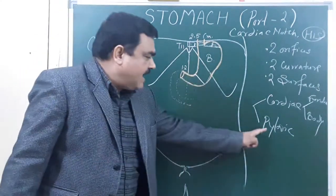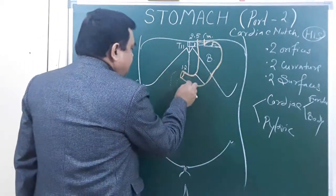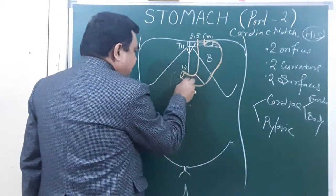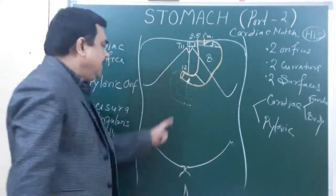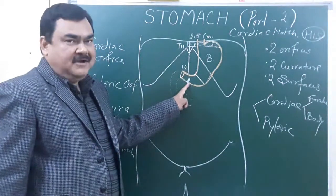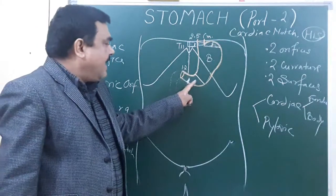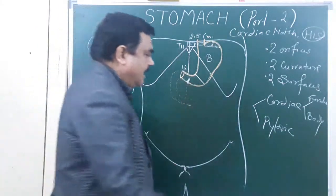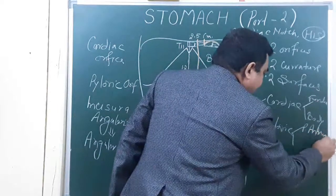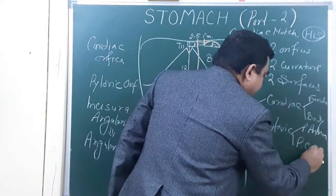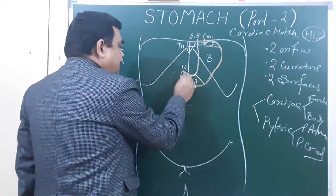The pyloric part is divided into two parts by the sulcus intermedius. This divides it into the pyloric antrum and the pyloric canal.